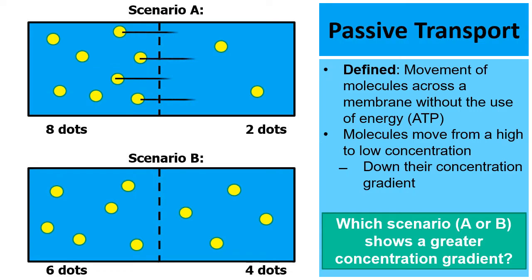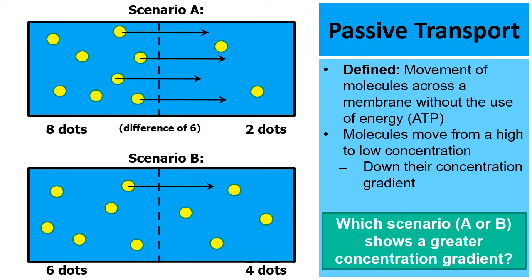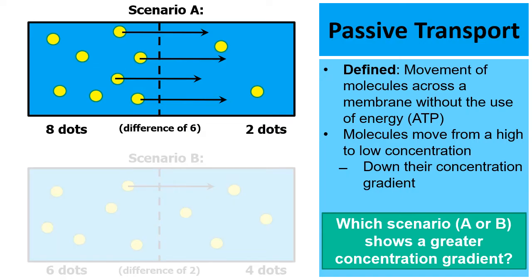In both cases, the molecules are going to move from the left to the right. In scenario A, it's going to take four of the yellow dots to move to the right to reach equilibrium, but in scenario B, only one has to move. So scenario A has a greater concentration gradient — there's a difference of six — compared to a difference of two for scenario B.